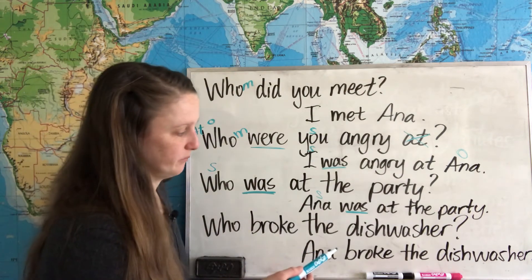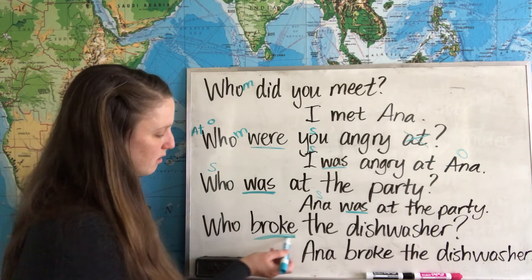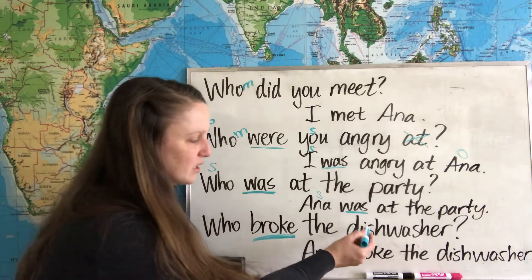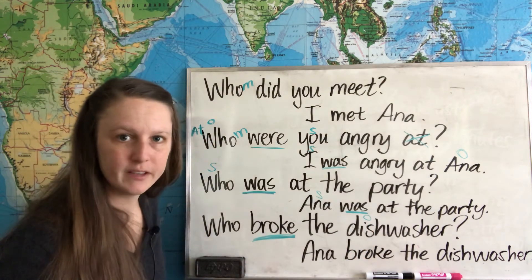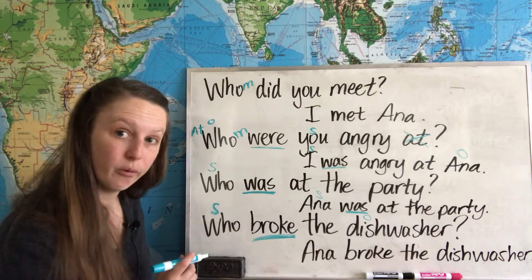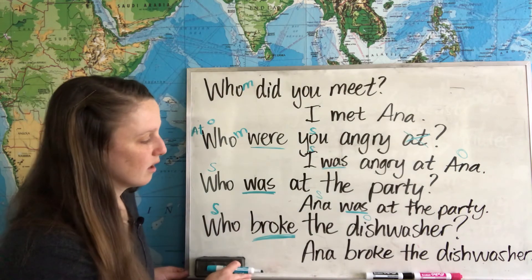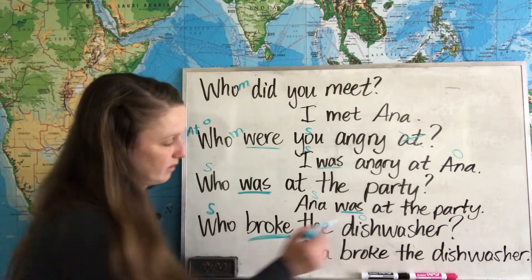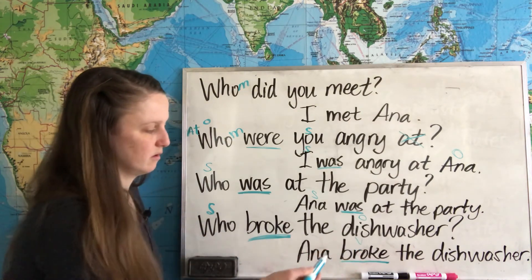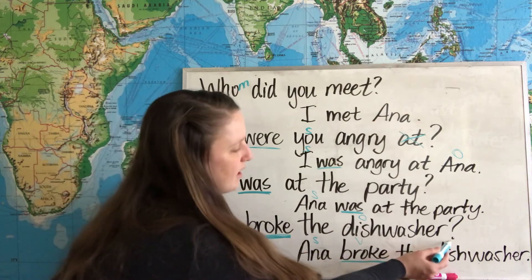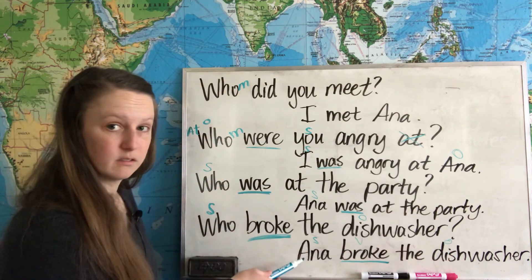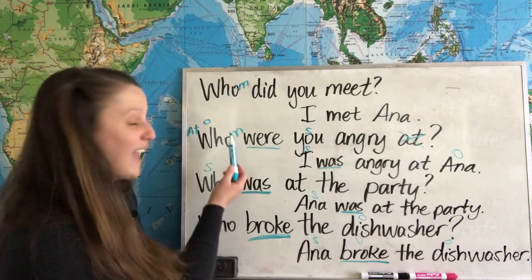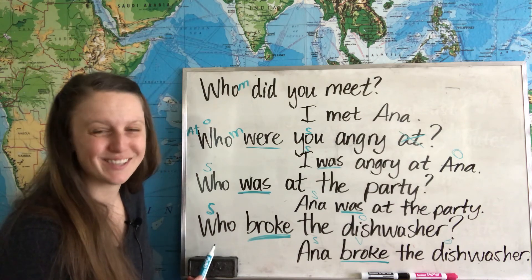One more example: Who broke the dishwasher? We find our verb and look for the subject. Dishwasher is an object, so we don't have an obvious subject for this verb, which means our subject is who. We can see the same thing in the second strategy — looking at the answer: Anna broke the dishwasher. We have our verb, subject, and object. Who broke the dishwasher? Anna. Anna broke the dishwasher. So we see who is the subject of the question, and we need to use who. We cannot use whom — we must use who because it's the subject of the question.